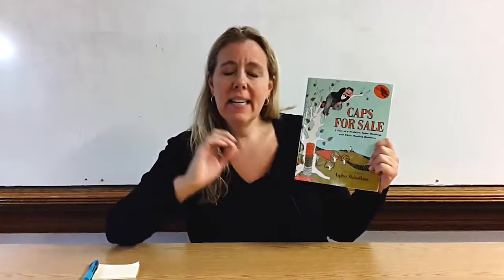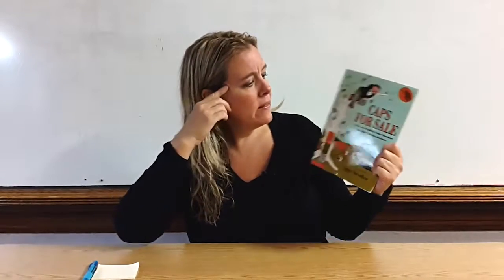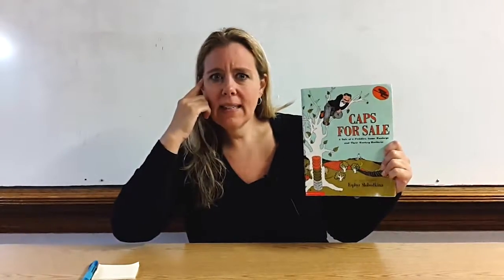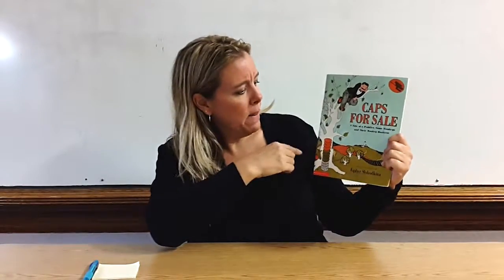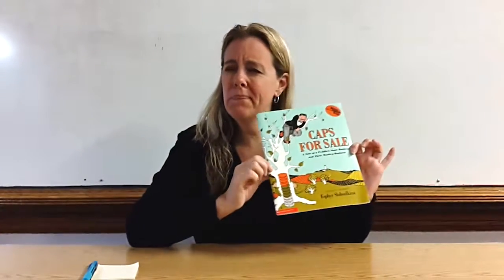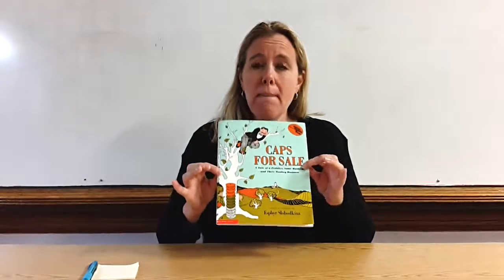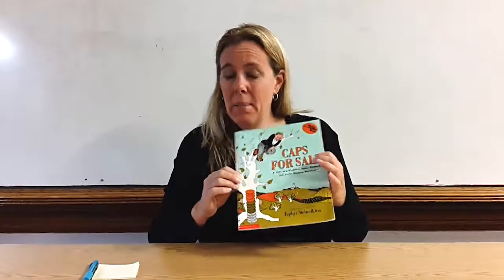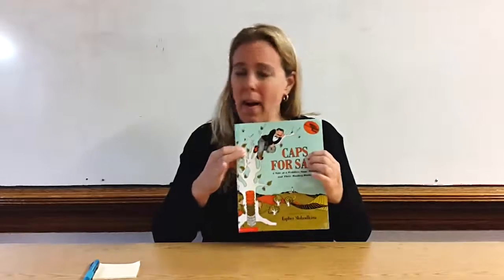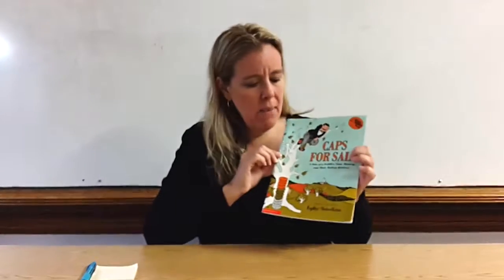So I might even have to tell them to predict. I think I see monkeys, there's hats, there's a man. What could this book be about? I know it's going to be about monkeys, I know it's going to be about a man. I don't know why he's in the tree, but maybe you might have an idea. Something about hats, especially since the title says Cats for Sale.